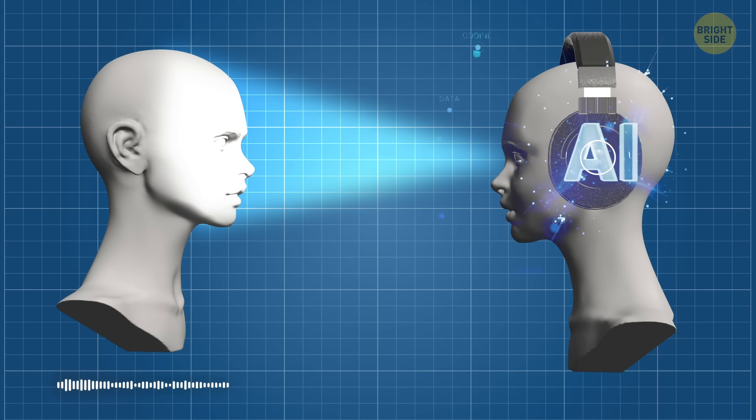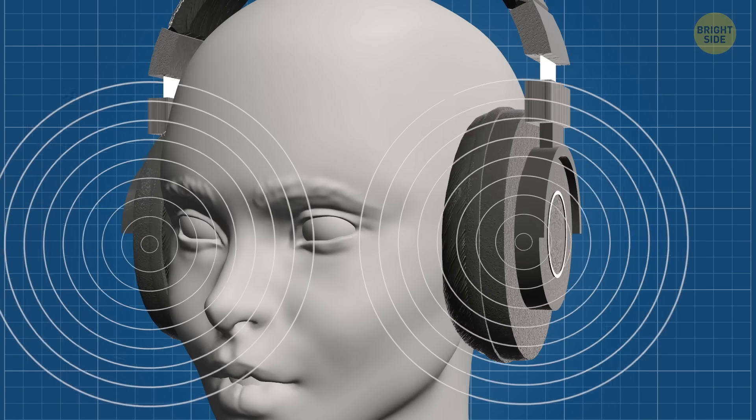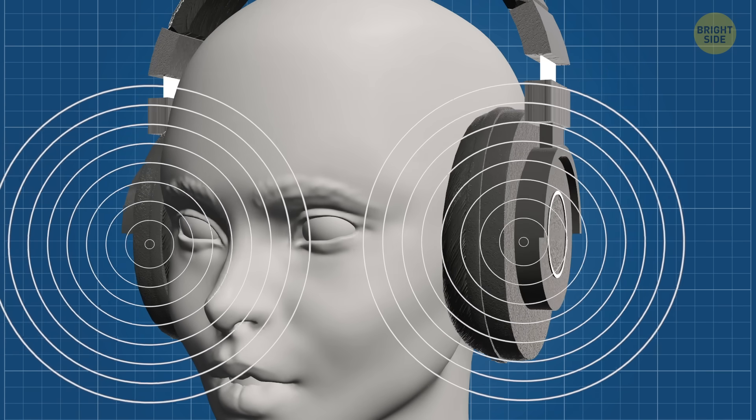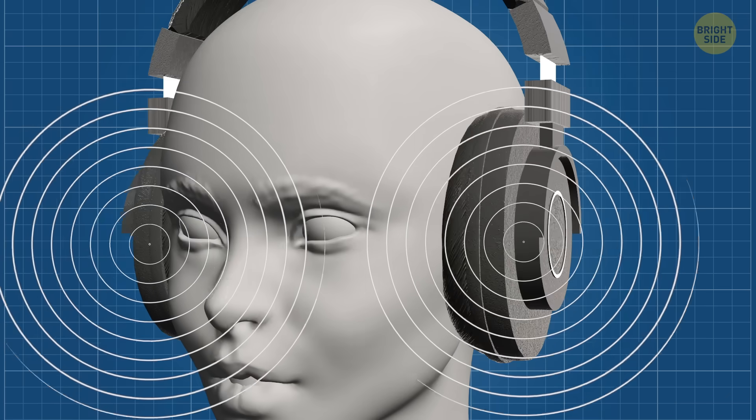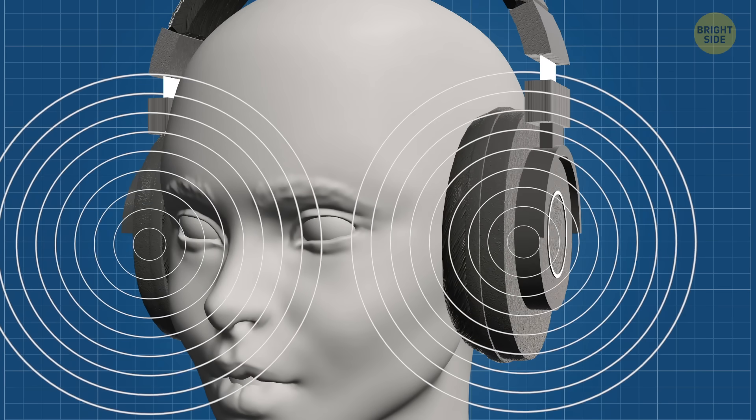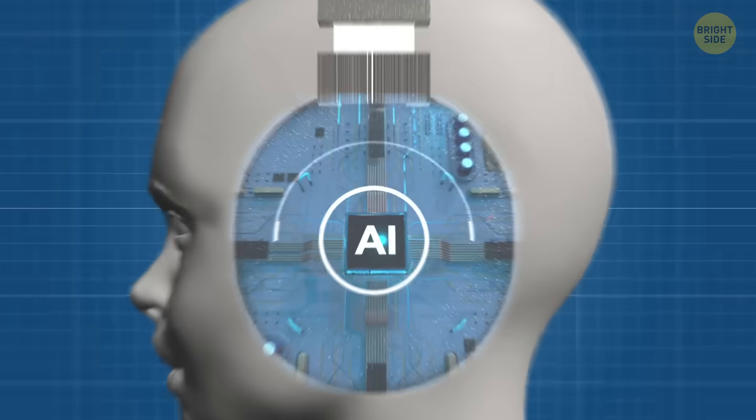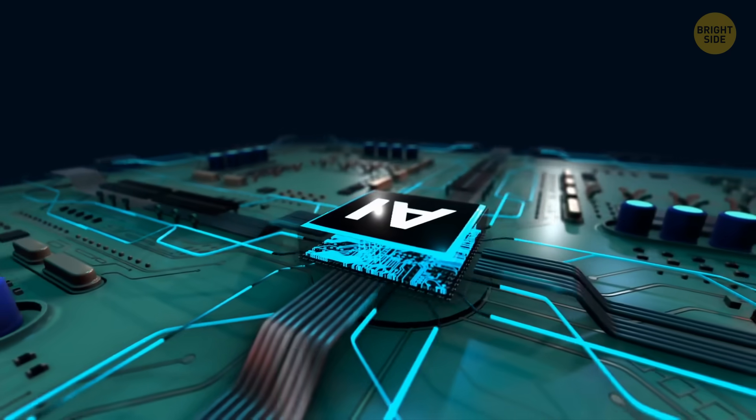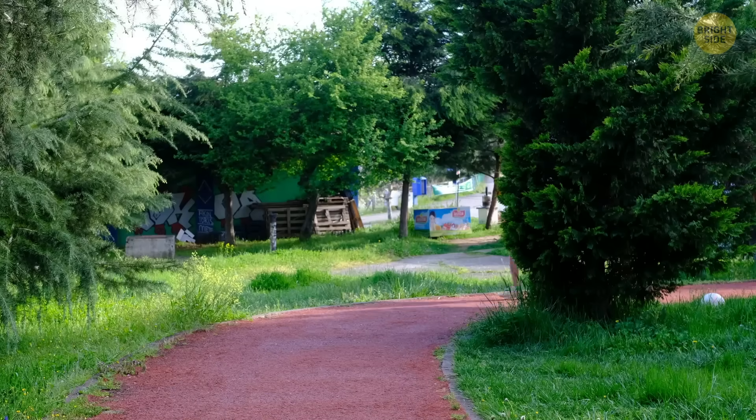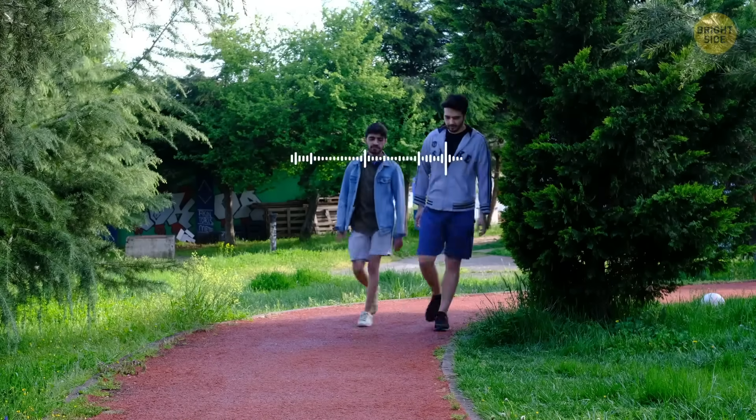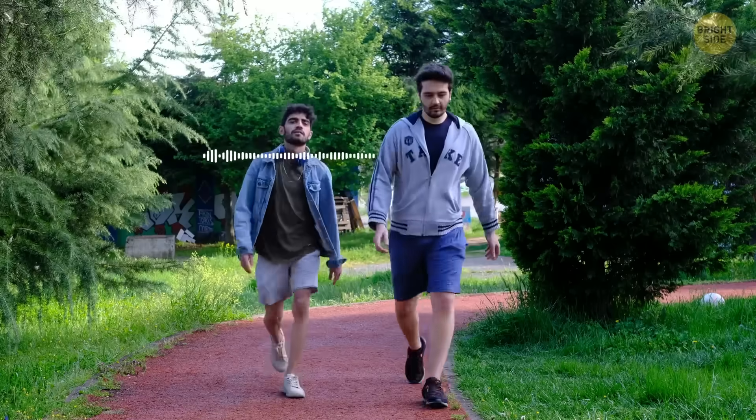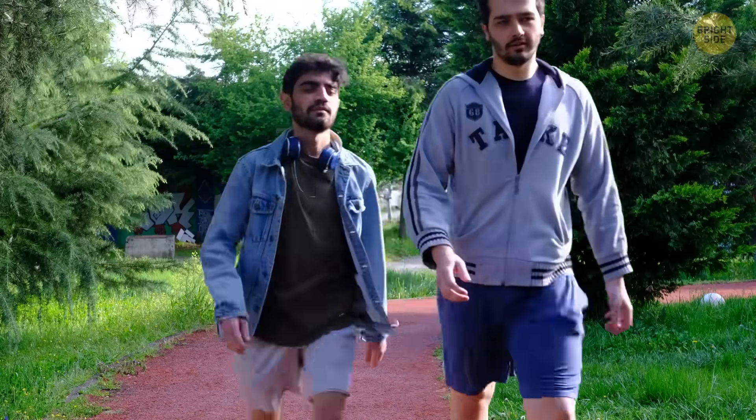The system figures out who you want to hear by measuring when their voice hits both microphones at the same time. There's a small margin of error, but it works pretty well. That sound is then sent to a small computer built into the headset. The AI software listens and learns the voice you've chosen. From that point on, the system keeps picking out that person's voice and playing it clearly to you, even if you're both moving around.